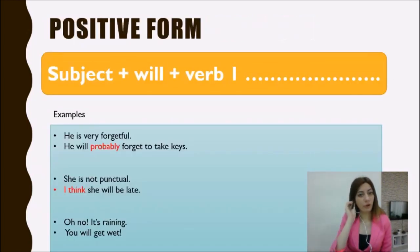Okay, look at the positive form. Firstly we put subject and then we put will and then we put verb one. Let's look at the example: He is very forgetful, he will probably forget to take keys. Look at the second example: She is not punctual, I think she will be late. And look at the third example: Oh no, it's raining, you will get wet.